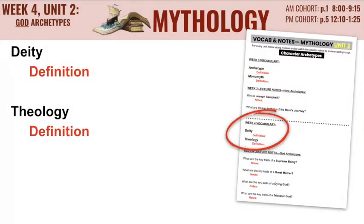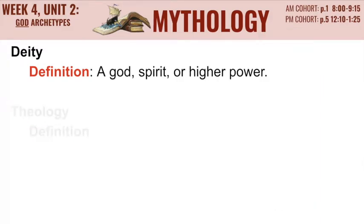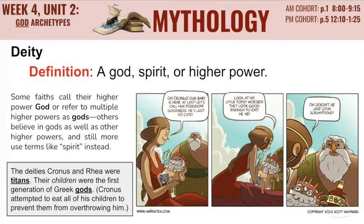Our vocab words for this unit are related: deity and theology. A deity is a god, or a spirit, or a higher power. Normally it's going to refer to a god, but there are some instances when that's not accurate. Some faiths call their higher power God with a capital G, or refer to multiple higher powers as gods with a lowercase g. Others believe in gods as well as other higher powers, and still more use terms like spirit instead of god. For example, the deities Cronus and Rhea were titans, not gods — their children were the first generation of Greek gods.